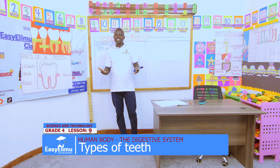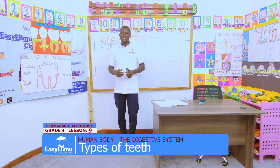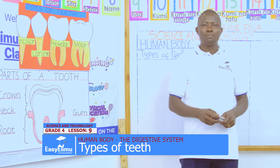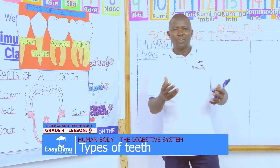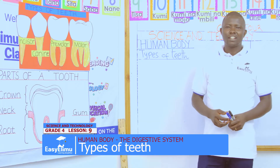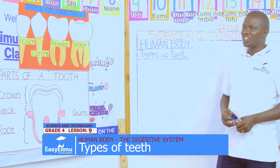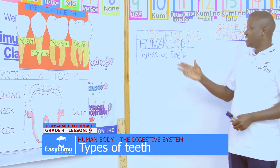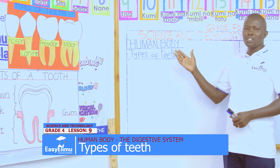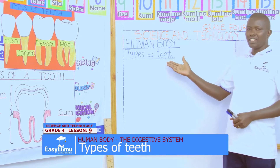Hello my learner. I am teacher Jonathan. This is Easy Elimu Learning Simplify. Welcome. In our grade 4 science and technology, on human body today, we look at types of teeth.